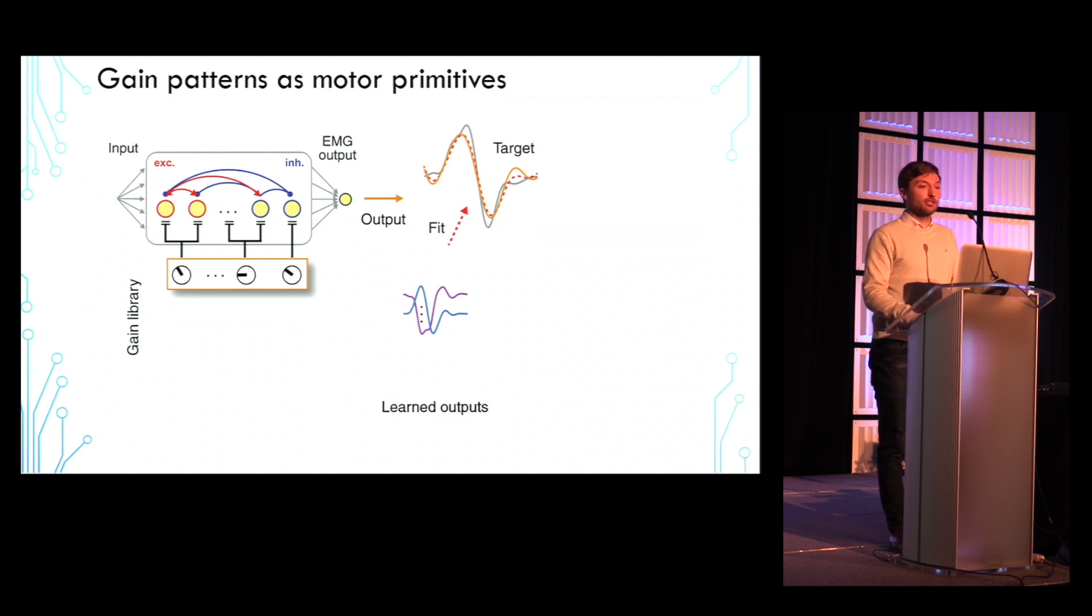Furthermore, with an increasing number of gain patterns in the movement library, the network output error tends to decrease on average, as shown here on the right.